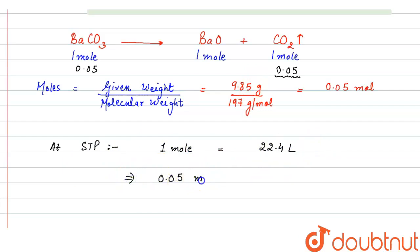So here we have 0.05 moles, so 0.05 moles will occupy 22.4 into 0.05 liter volume, so it will be equal to 1.12 liter.